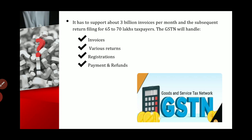The GSTN handles the following matters: Number one — invoices, meaning all bills, vouchers, and invoices of any taxpayer are managed and kept confidential. Second — various returns: whenever any taxpayer files a return or pays taxes, all that data is handled. Third — registration: any registration-related requirement is handled. Fourth — payments and refunds: any penalty, refund, or payment-related matter for taxpayers is handled by the GST Network.